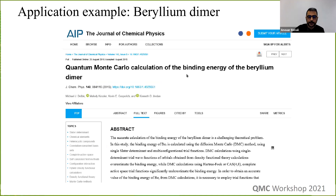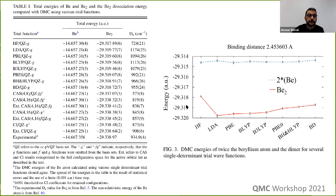To go through this lab, I chose the beryllium dimer as the example. The beryllium dimer has been well studied using multiple methods including QMC — notably in a 2015 paper from Ken Jordan's group at Pittsburgh University, which did an extensive study using multiple trial wave functions. We have a good experimental reference to compare to, which is always important for your first calculations.